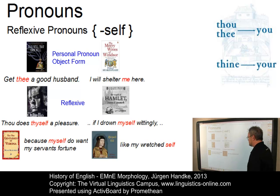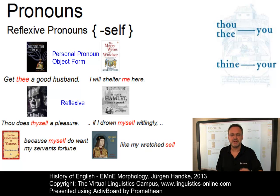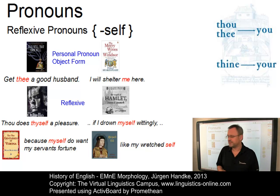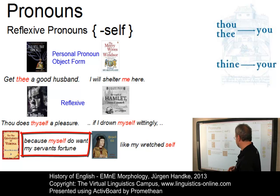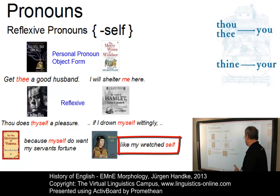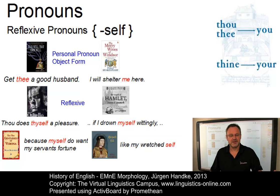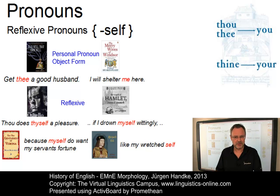Last but not least, there were forms where self was originally an independent pronoun in English and could be used as both subject and object — for example, because myself do want my servant's fortune and lake may reach itself. This represents a different use of the reflexive pronoun as compared with present-day English.